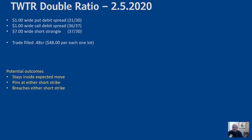The double ratio trade was filled for a 48-cent credit. Now let's consider the potential outcomes. Price could stay inside the expected move — which happens about 70% of the time. It could pin at either short strike — the $30 put or the $37 call — which would be the best scenario. Or it could breach those short strikes and blow through the $30 put or the $37 call.